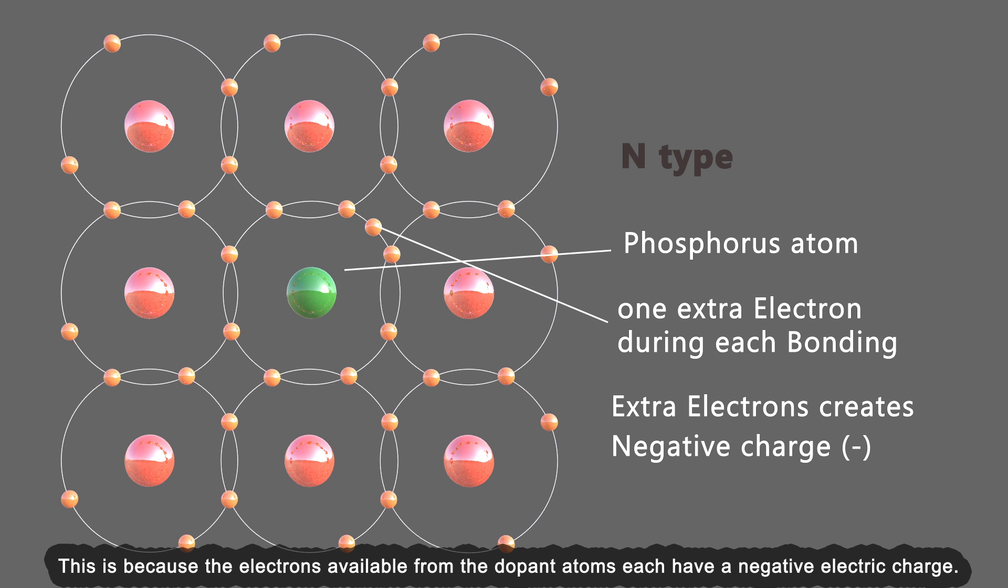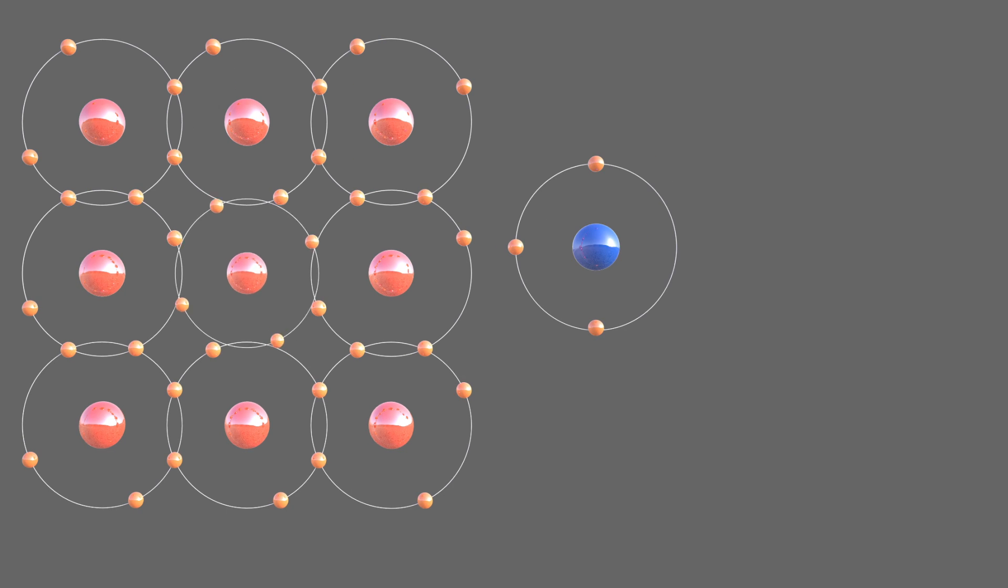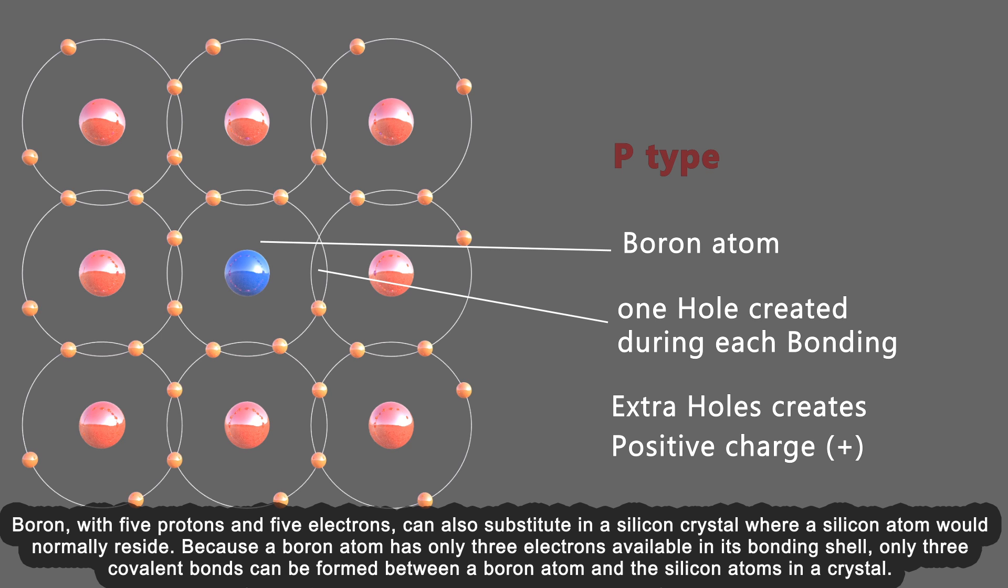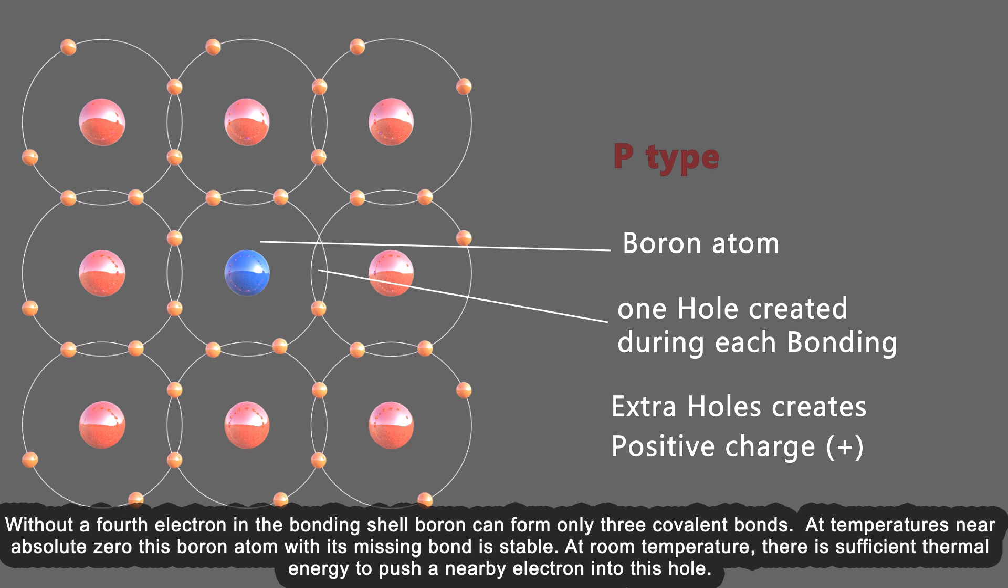Boron, with five protons and five electrons, can also substitute in a silicon crystal where a silicon atom would normally reside. Because a boron atom has only three electrons available in its bonding shell, only three covalent bonds can be formed between a boron atom and the silicon atoms in a crystal. Without a fourth electron in the bonding shell, boron can form only three covalent bonds. At temperatures near absolute zero, this boron atom with its missing bond is stable.